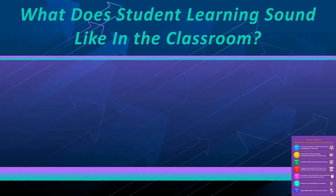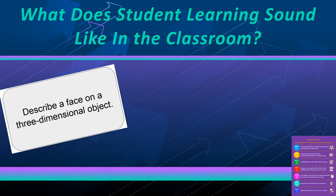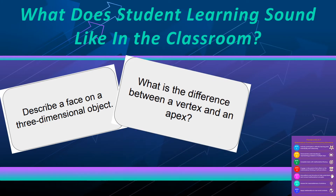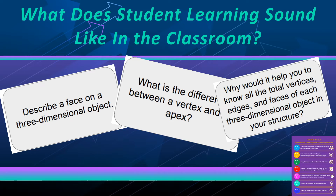What does student learning sound like in the classroom? Since this unit is so heavy on vocabulary, it is important that students are continually discussing the attributes of the various 3D figures. They should describe, identify, compare, and discuss differences between the figures and the attributes. Students might mix up some of the different figures, but should respond with an understanding that a vertex is the point where any two edges meet, while an apex is always opposite the base.